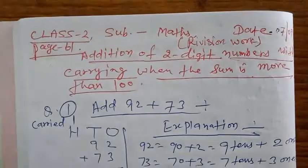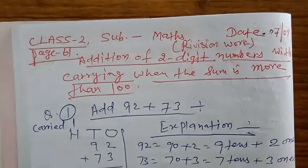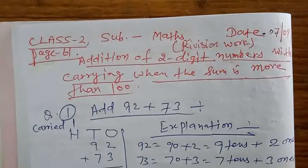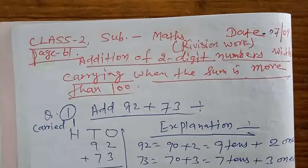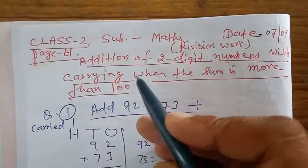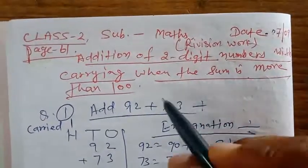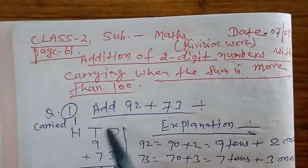Good morning, children. Today, I am solving some questions from page 61. This is region 1. I solve question number 1 as an example. Let us learn: addition of two digit numbers with carrying when the sum is more than 100. Let us go to question number 1.